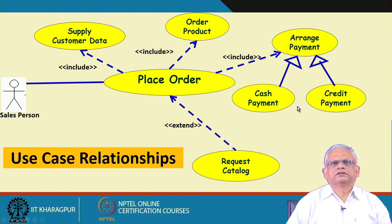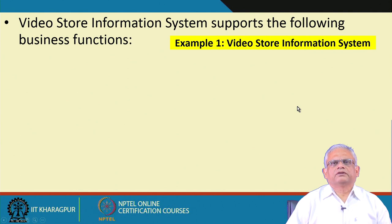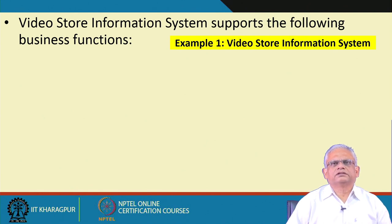Now let us try an example — we will develop a use case for the Video Store Information System. We have an informal text description, and based on that we will identify the use cases. Remember that a use case is a functionality to be performed by the system. We will identify the user who will invoke this functionality, document each functionality as a use case, and connect them to the appropriate users.